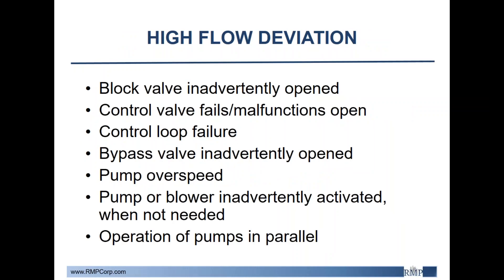Moving on to the high flow deviation. Some common causes here are block or control valves being fully opened, control loop failures, or a bypass valve being inadvertently opened. There are also a number of things that occur with pumps or blowers, such as pump over-speeding or being activated when not needed. Facilities also often have pumps operating in parallel with only one operating at a time, so if both were activated that could also create a high flow scenario.